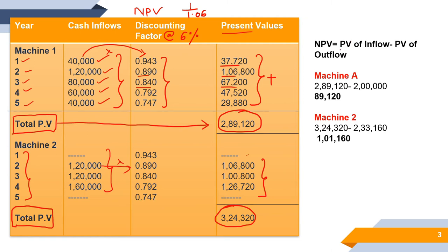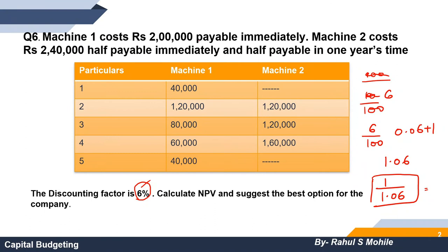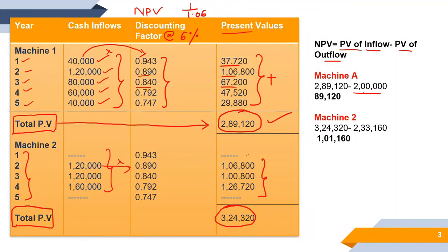The formula to calculate NPV is: Present Value of Inflows minus Present Value of Outflows. For Machine 1, the total present value of inflows is 2,89,120, and the cost of Machine 1 is 2,00,000. So NPV of Machine 1 = 2,89,120 minus 2,00,000, which gives us 89,120.